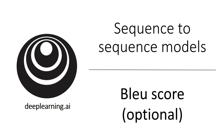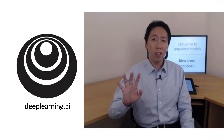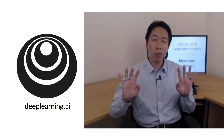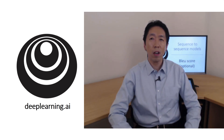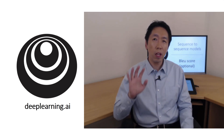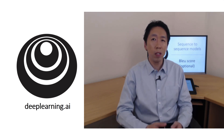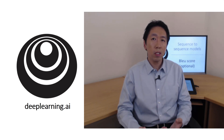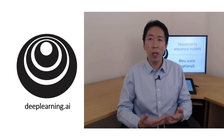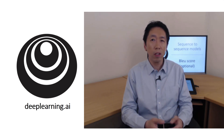One of the challenges of machine translation is that given a French sentence, there could be multiple English translations that are equally good. So how do you evaluate a machine translation system if there are multiple equally good answers? Unlike image recognition, where there's one right answer and you just measure accuracy — if there are multiple great answers, how do you measure accuracy?